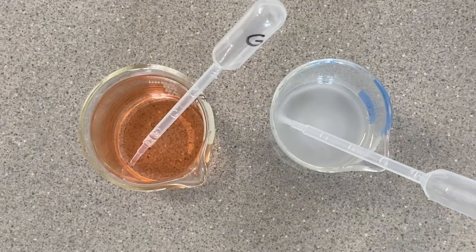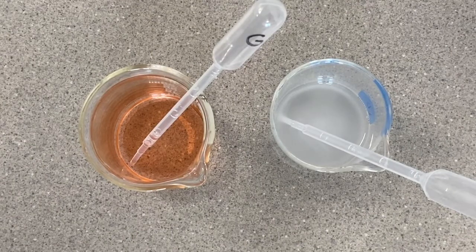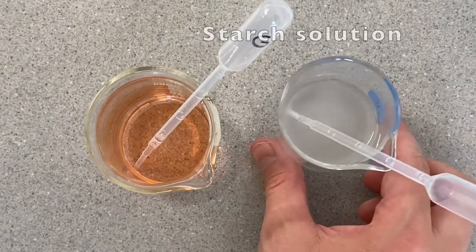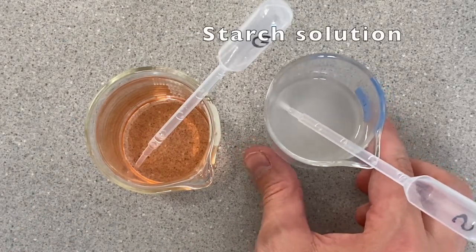Our next step in this lab is to fill each one of our cell models with a different solution. This orangey one here is a glucose solution and this cloudy white one is a starch solution.